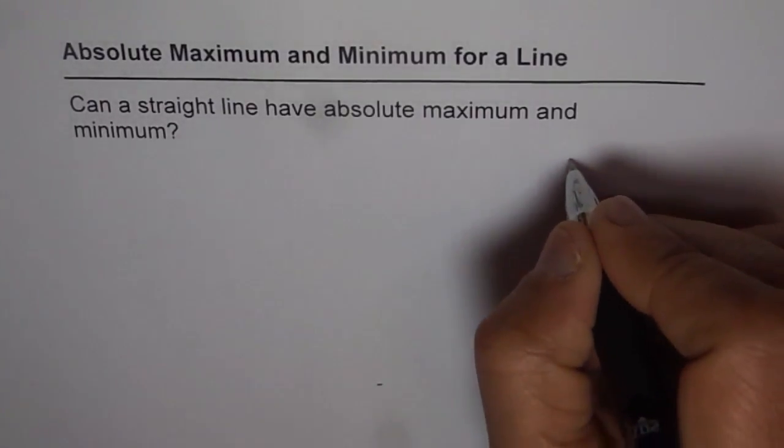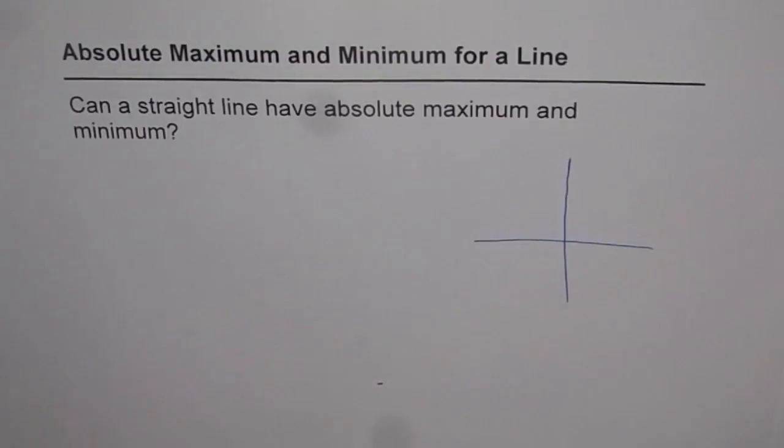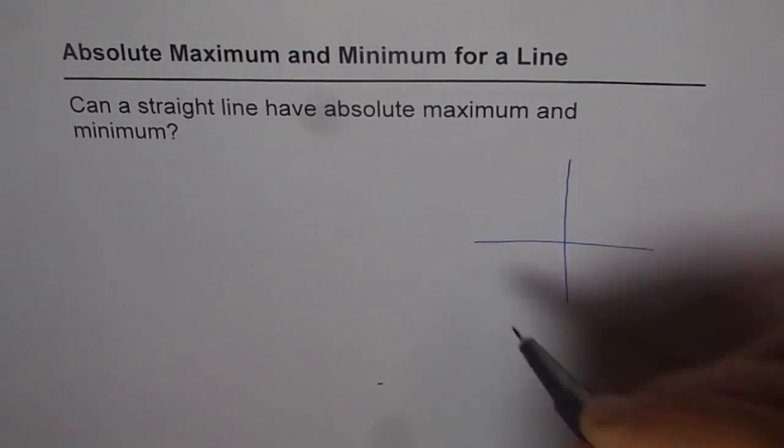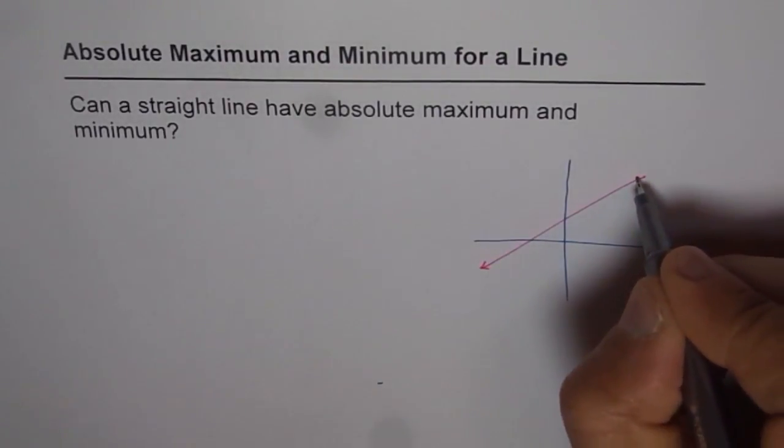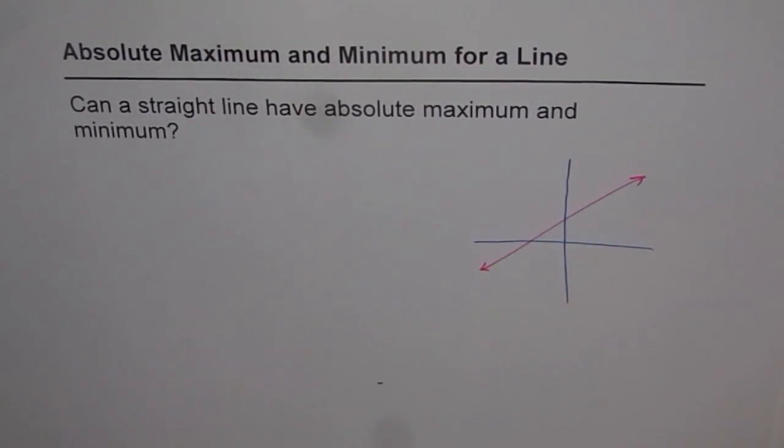Let's have a look at the straight line. We have a straight line here, let's say a line going like this. It extends from minus infinity to plus infinity. It never turns. So thinking about maximum or minimum in a line is kind of difficult. But could there be a possibility that we have absolute maximum and minimum on a line itself?